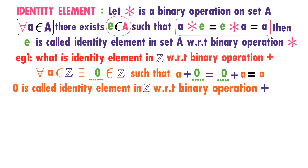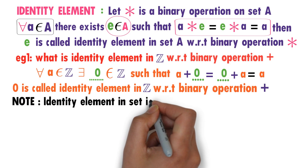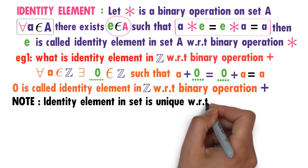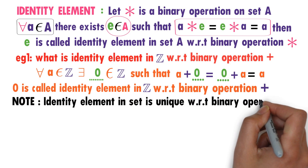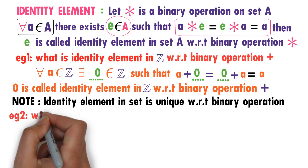Important note: the identity element in Z is unique. In this example, 0 is the only element satisfying the condition A plus 0 equals 0 plus A equals A. Therefore, the identity element is unique.